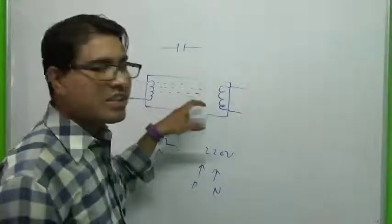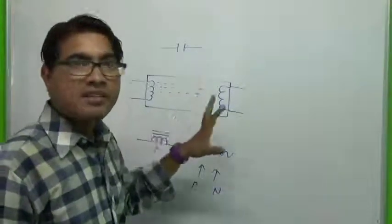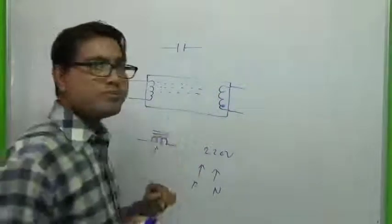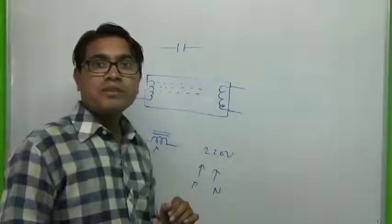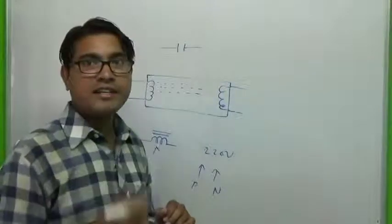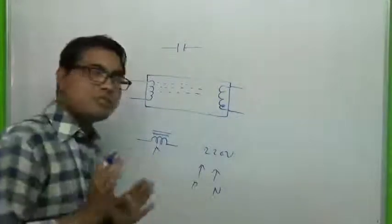So the gas inside this tube becomes ionized and our fluorescent tube gets lit up. This is the basic principle.